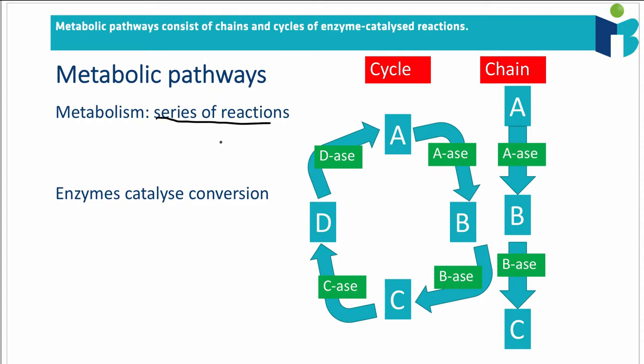So it's where one thing converts into another which converts into another. And there's two types of metabolic pathways, largely. Either you can have a chain, so where something like A is converted into B by an enzyme. And typically the notation for an enzyme is that it's some derivative of the substrate, and then you just put A's at the end. So for example, if you have lactose, then the enzyme is called lactase.